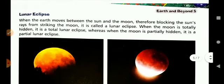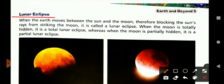Now lunar eclipse. When the earth moves between the sun and the moon, as we have seen in the picture, when the earth is between the sun and the moon, therefore blocking the sun's rays from striking the moon.